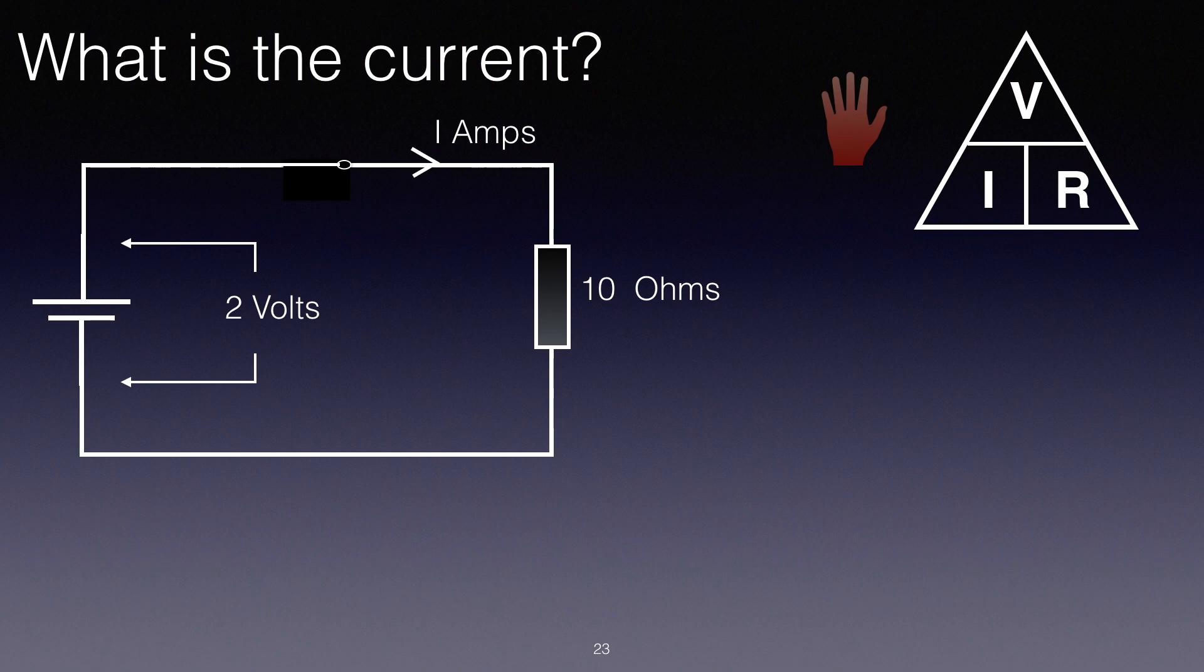And this is the question: What is the current in the simple circuit? Well I can see I've got two volts and ten ohms, and I've got I amps, so I is what I need to find out. So I cover up I with my hand or finger, and that leaves V over R. I can write down the equation I equals V over R. I is now the subject of the formula.